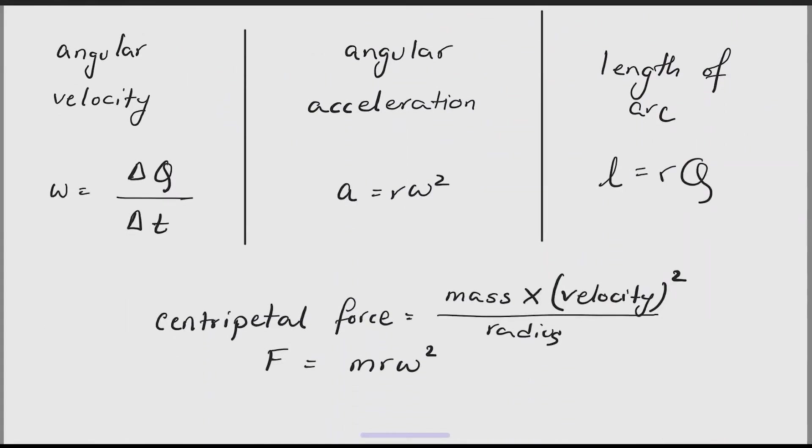The speed at which the object is moving around a particular spot is angular velocity. It is called velocity because it has a fixed direction. As the object is moving in a circular motion it might increase its speed. That is called angular acceleration. The path that the object takes is called the length of the arc. You can see the corresponding formulas written below.